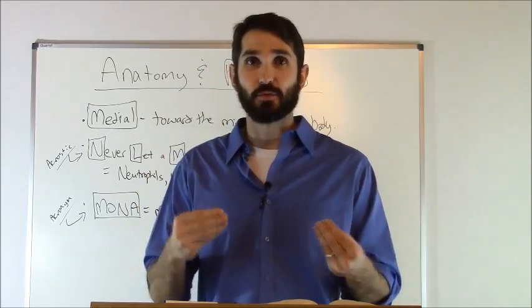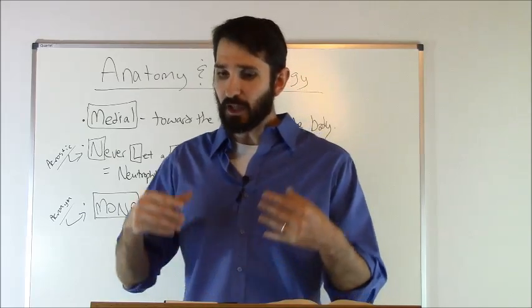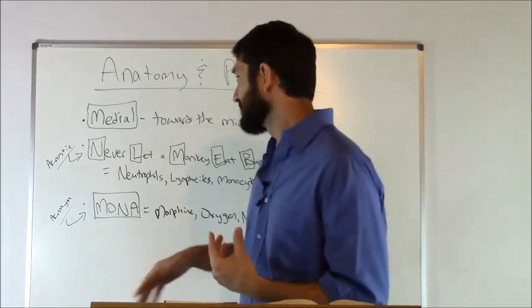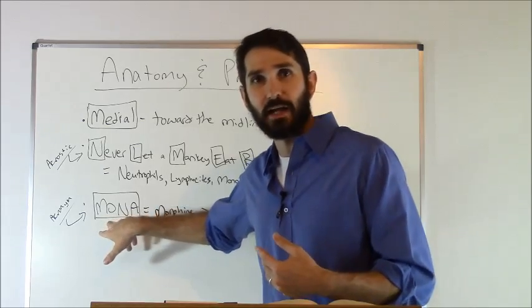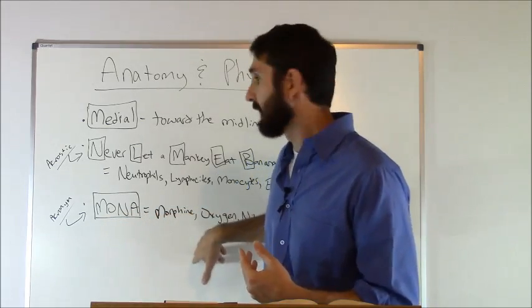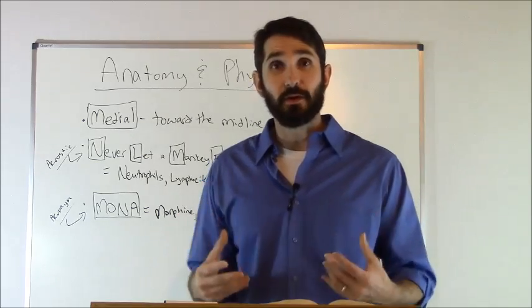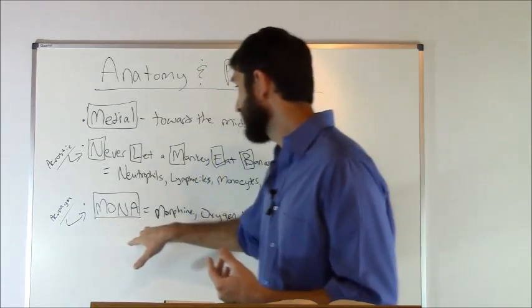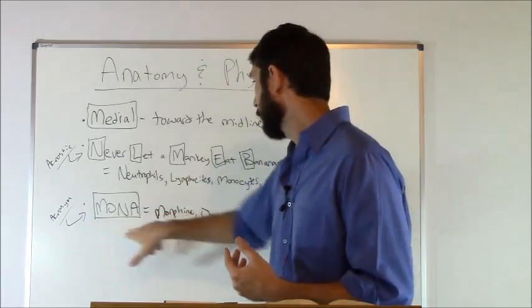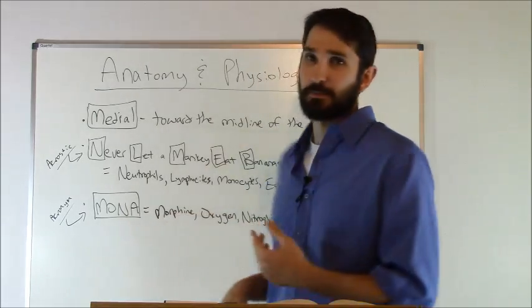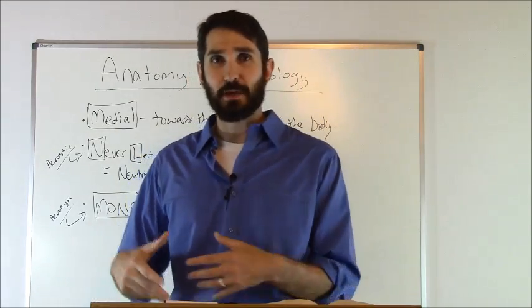Okay, next you got acronyms. And an acronym is basically just a short word where each letter will represent a whole word. And so, for example, MONA - that's a way that a lot of nursing students remember treatment for chest pain. And MONA just stands for M - morphine, O - oxygen, N - nitroglycerin, and A - aspirin. And again, that's just a treatment for chest pain - a simple acronym that you can remember.